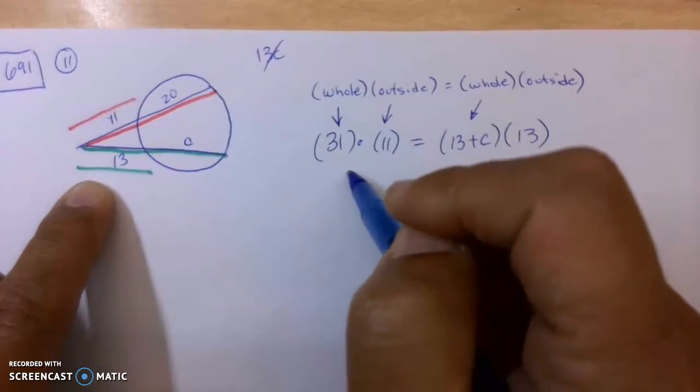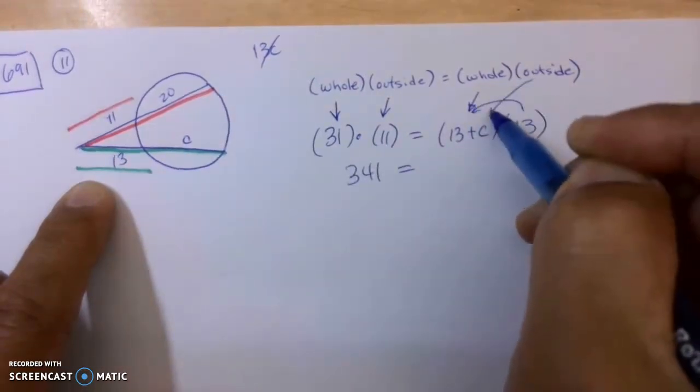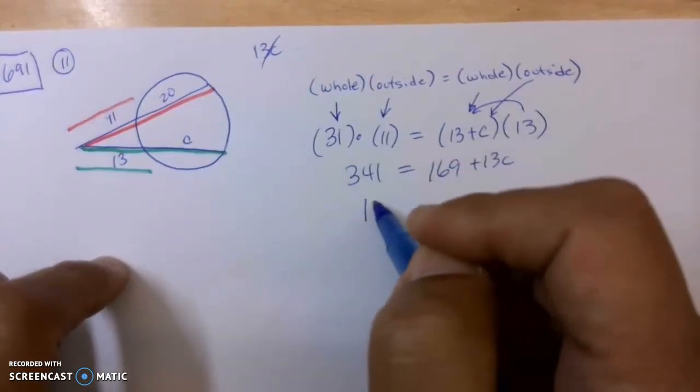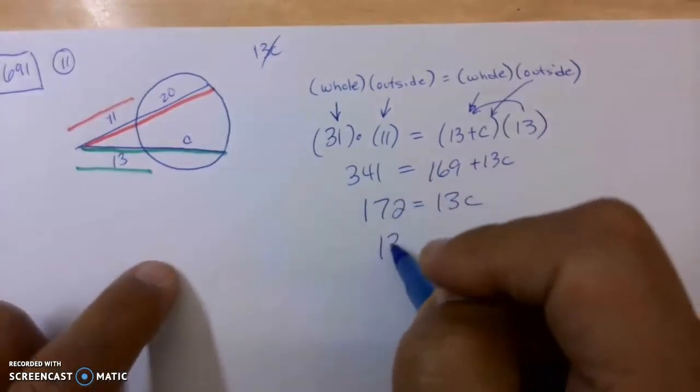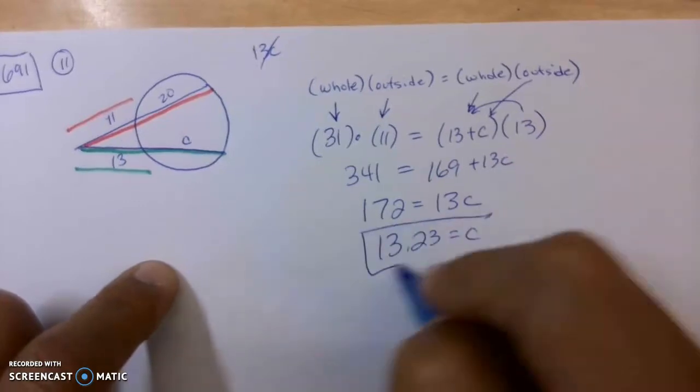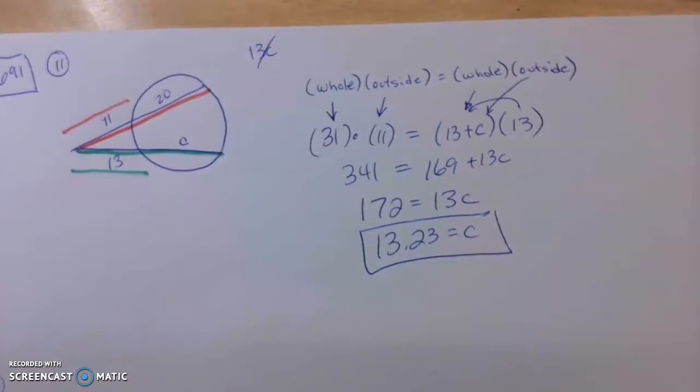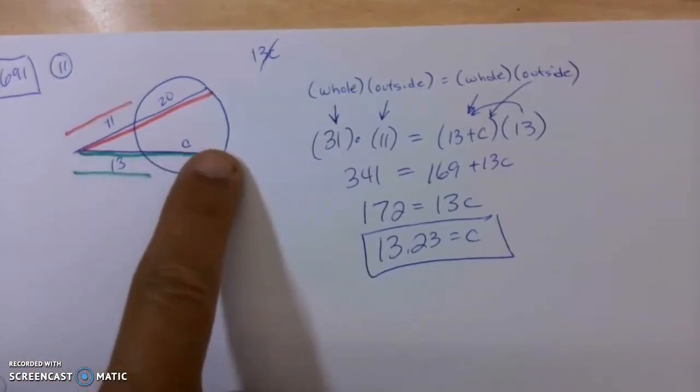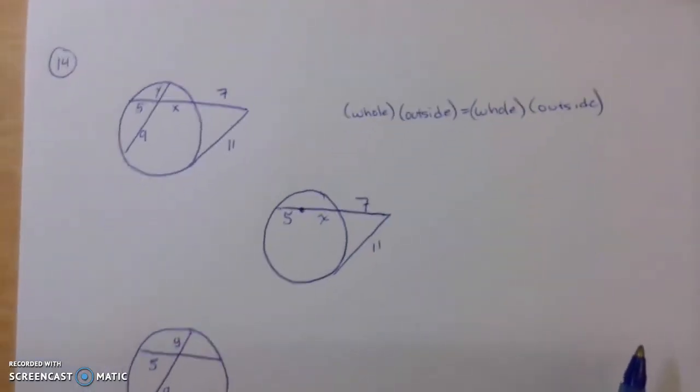Multiply this, you're going to need a calculator, that's 341, and then do the distributive property here. This is 169 plus 13C. Minus the 169 over, and then divide by 13, and you're going to get an ugly number here, but this should be the answer for C. This should be 13.23. Whole part times the outside is equal to whole part times the outside, and pay attention to the fact that the variables here, it's 13 plus C.